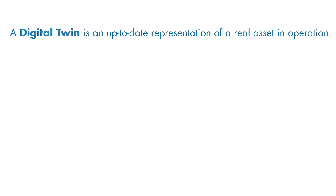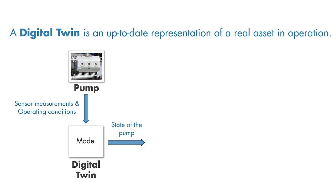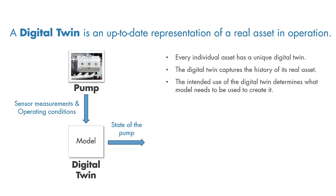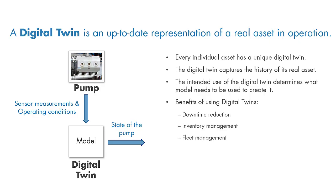In summary, a digital twin is an up-to-date representation of an asset in operation. Data captured from the asset and the environment are periodically sent to the digital twin, which is updated and tuned to its real asset. Every individual asset has a unique digital twin that captures the history of its real asset. The modeling method used to create a digital twin is driven by the intended use. By using digital twins, you can predict failures in advance and reduce downtime, better manage spare part inventories, monitor and manage your fleet, run what-if simulations, and optimize operations.